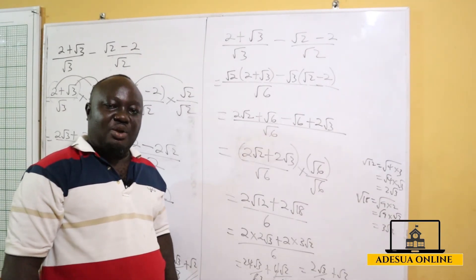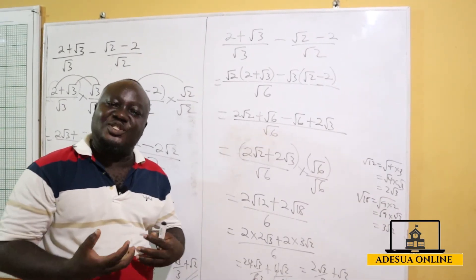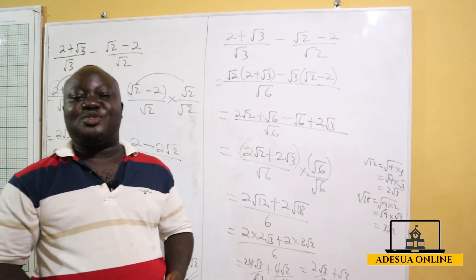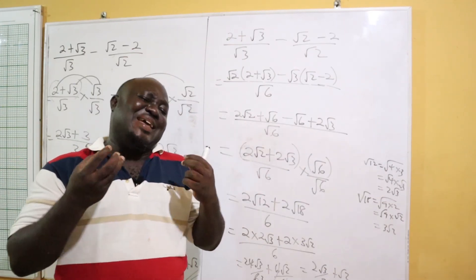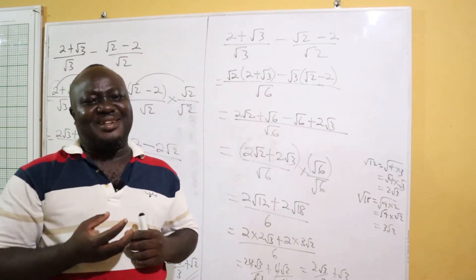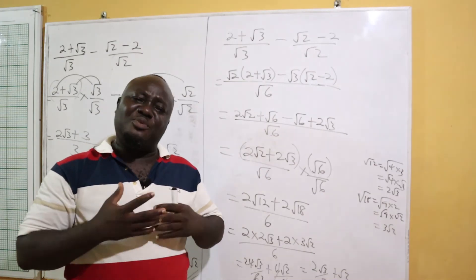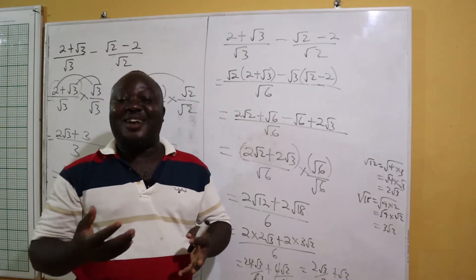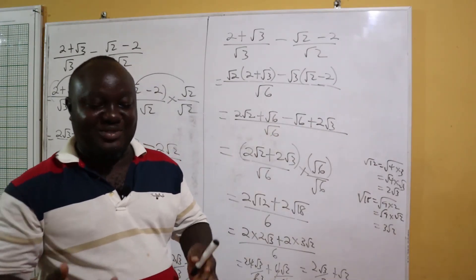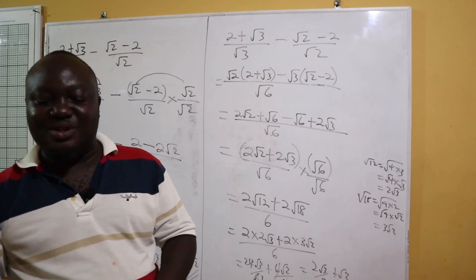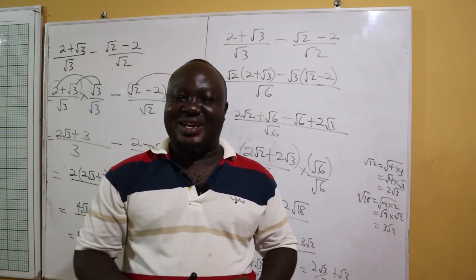So you can either rationalize each fraction first and then solve, or find the LCM first and rationalize at the end — both methods give the same answer. I encourage you to practice more examples, as these are very straightforward once you get the hang of them.